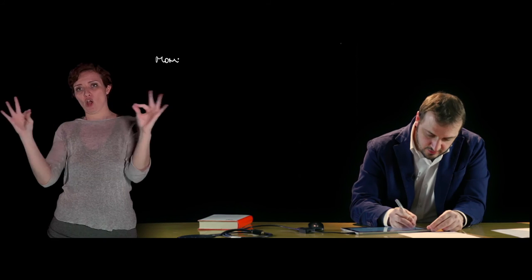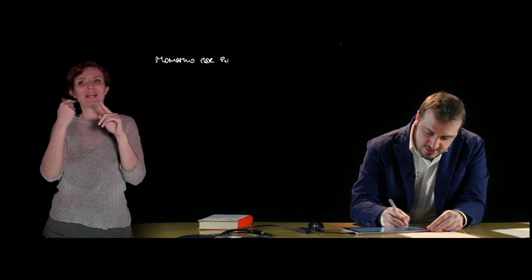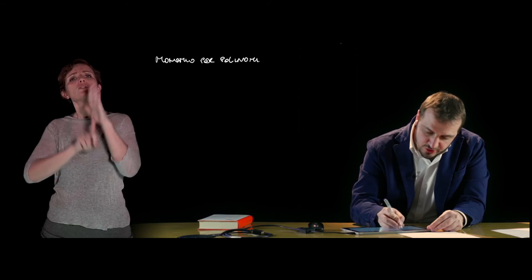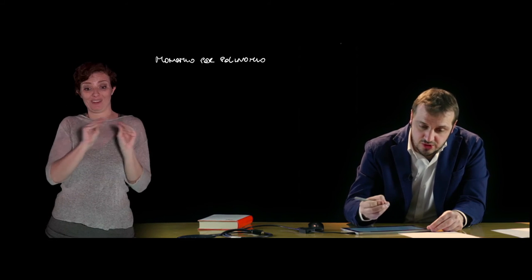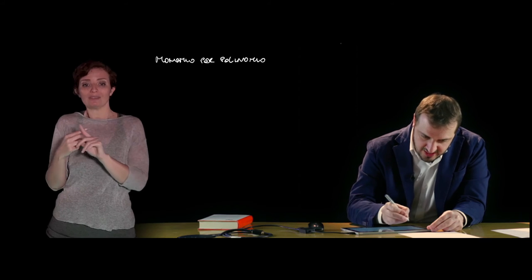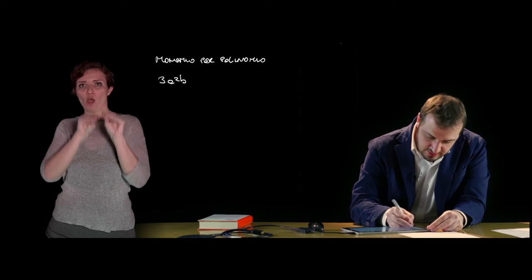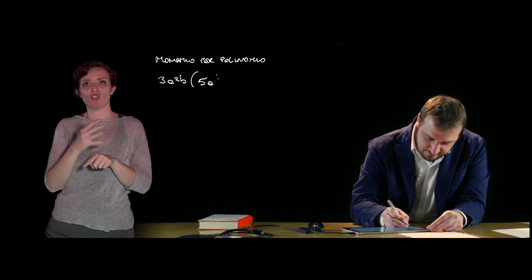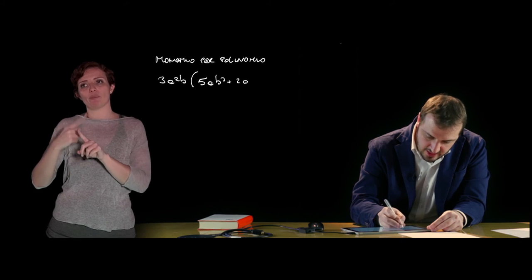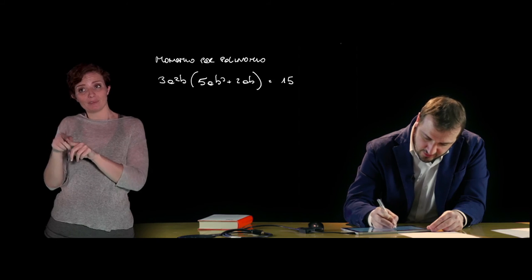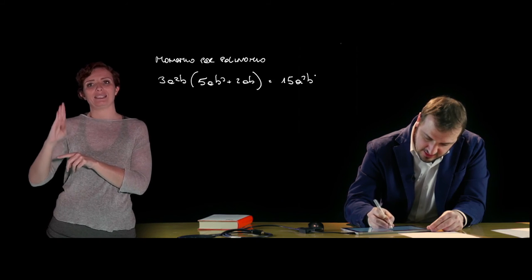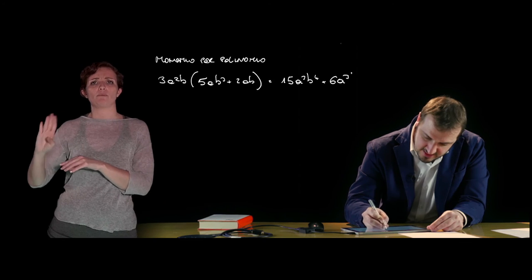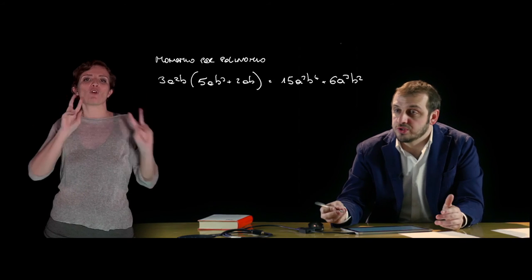Per quanto riguarda la moltiplicazione, è possibile moltiplicare un monomio per un polinomio e un polinomio per un altro polinomio. Per la moltiplicazione di monomio per polinomio, il risultato è un polinomio che ha come termini tutti i prodotti del monomio per ciascun termine del polinomio dato. Quindi ad esempio 3a alla seconda b che moltiplica 5a b alla terza più 2a b sarà uguale a 15a alla terza b alla quarta più 6a alla terza b alla seconda.